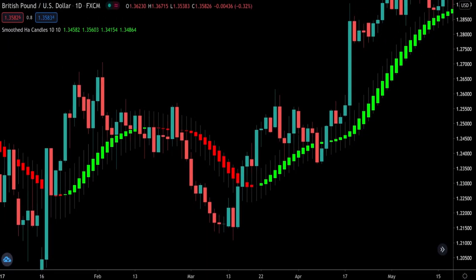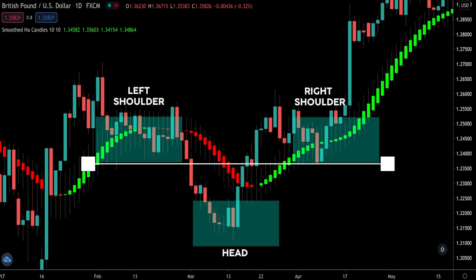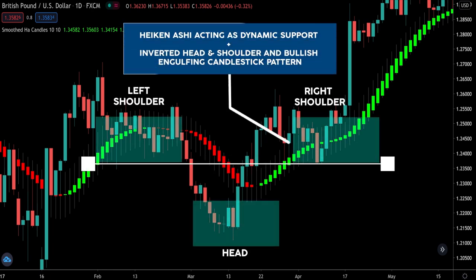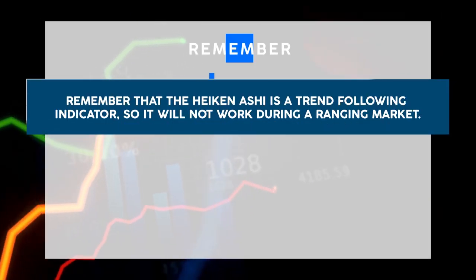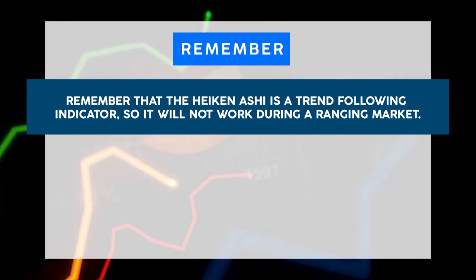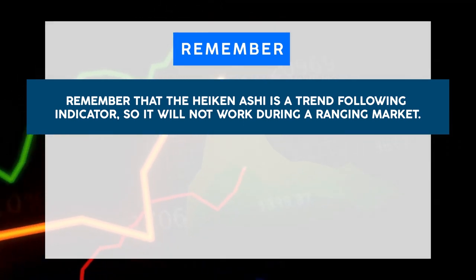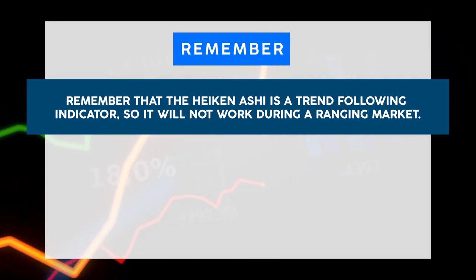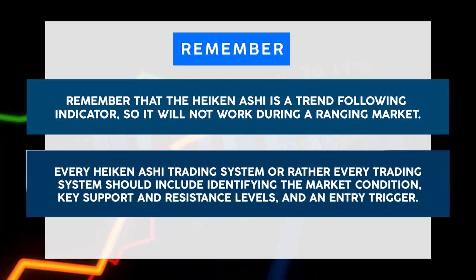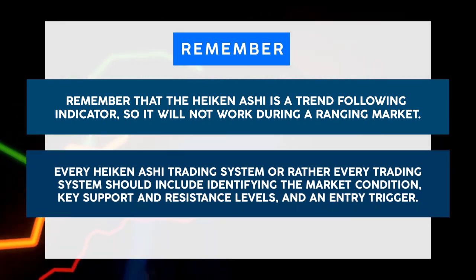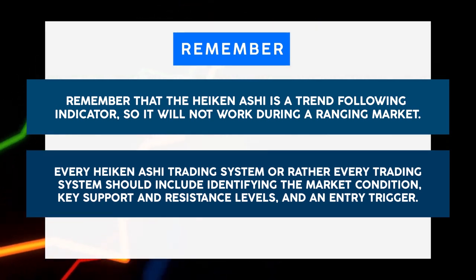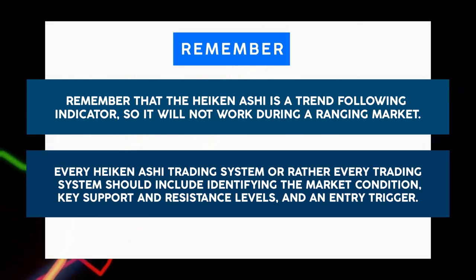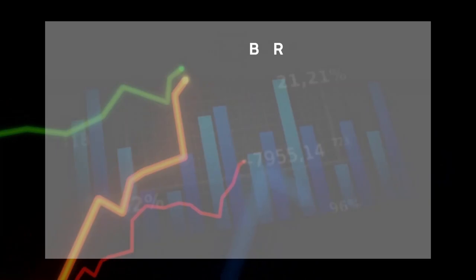Regardless of how you use the smoothened Heiken Ashi, you need to combine it with the underlying market context and price action. Do not blindly trade every time price hits the Heiken Ashi. Remember, it is a trend-following indicator, so it will not work during a ranging market. Every trading system should include identifying the market condition, key support and resistance levels, and an entry trigger. Do not enter blindly using this indicator.